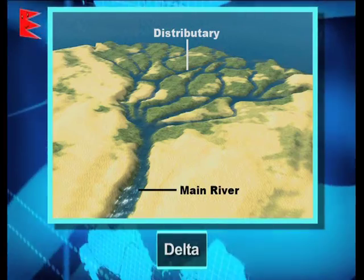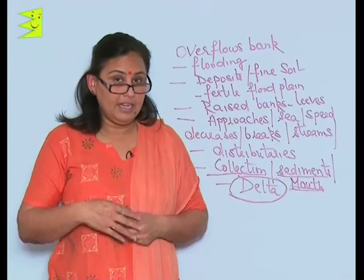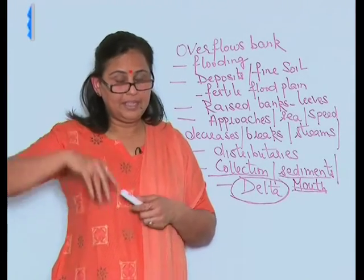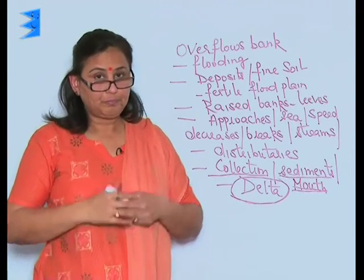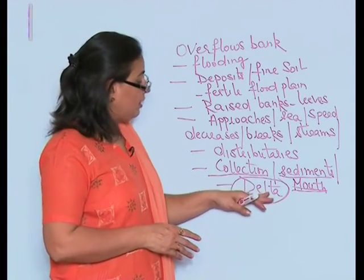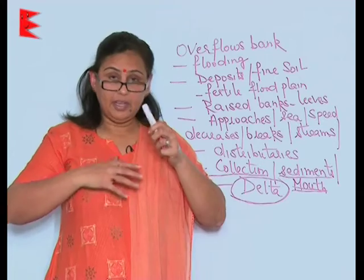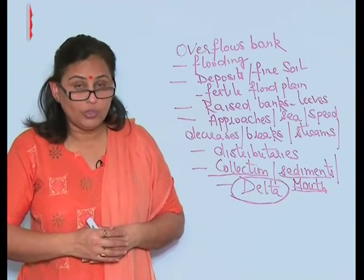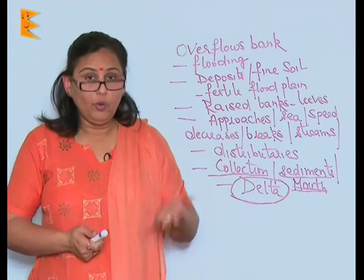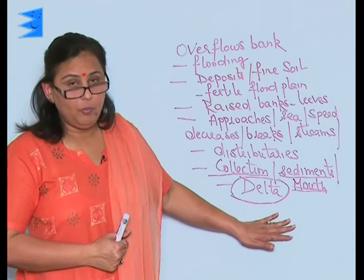The river's speed is very high in its first course on mountains and rocks, becomes moderate in the plains, and dies down as it approaches the sea. The various landform changes along the river's course are driven by these changes in speed across its different stages.